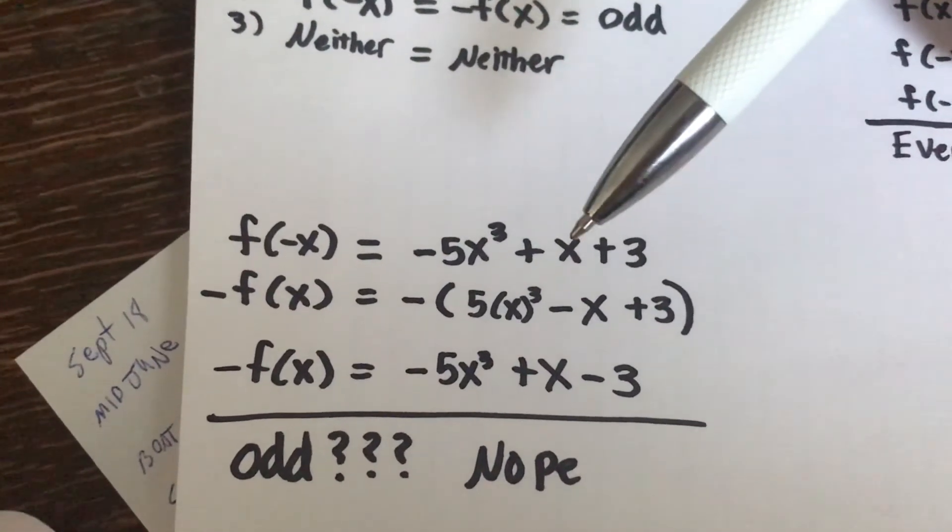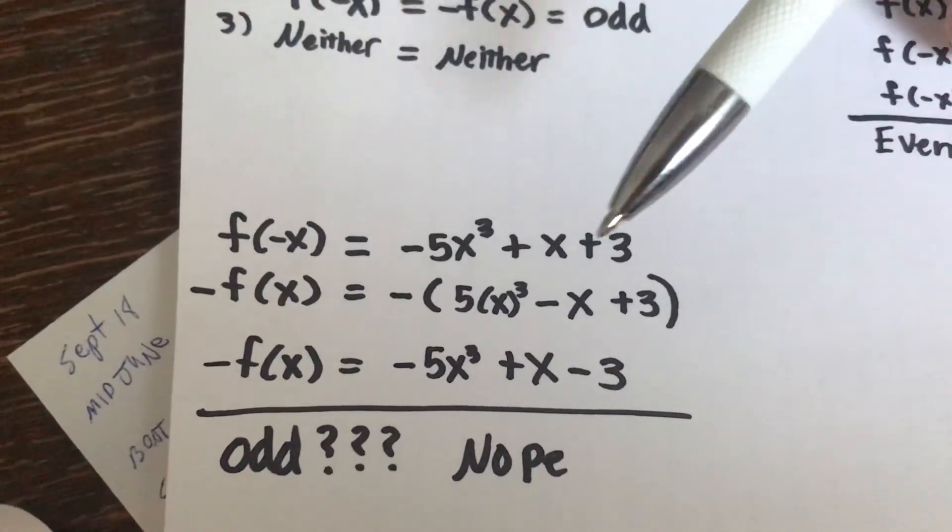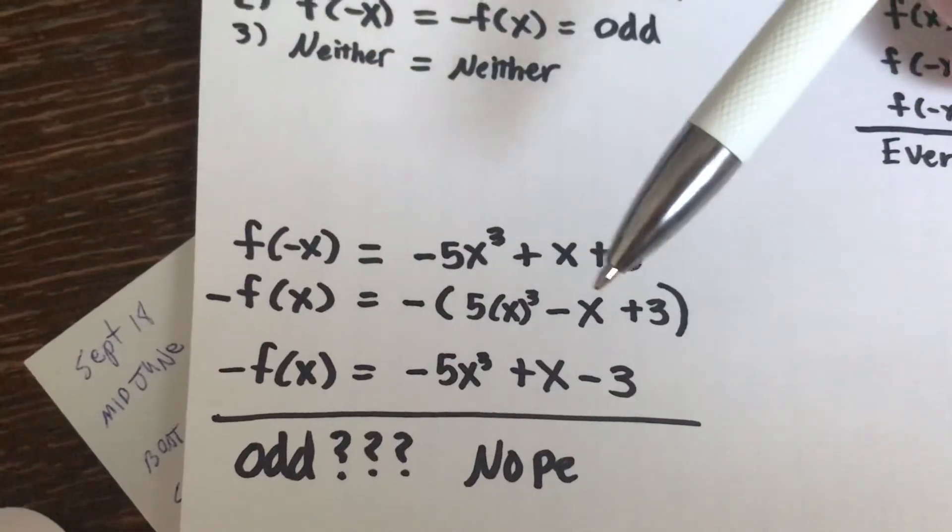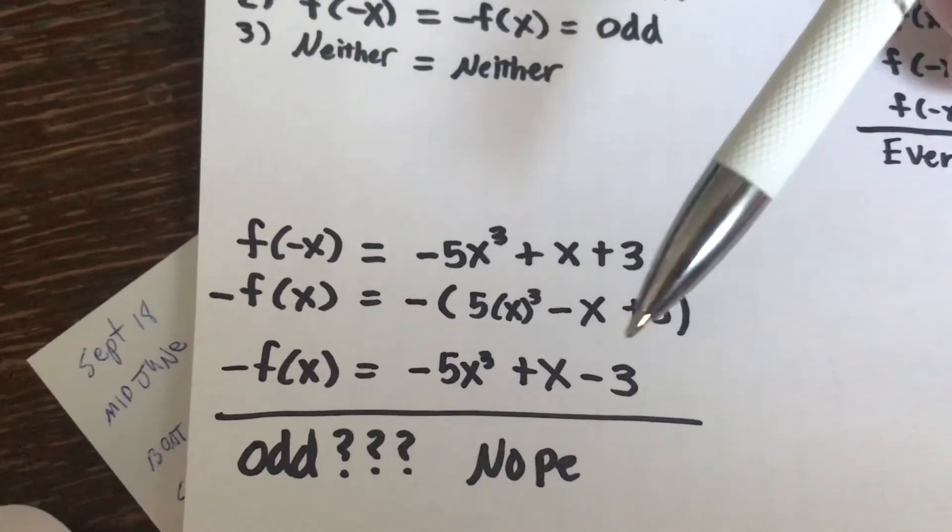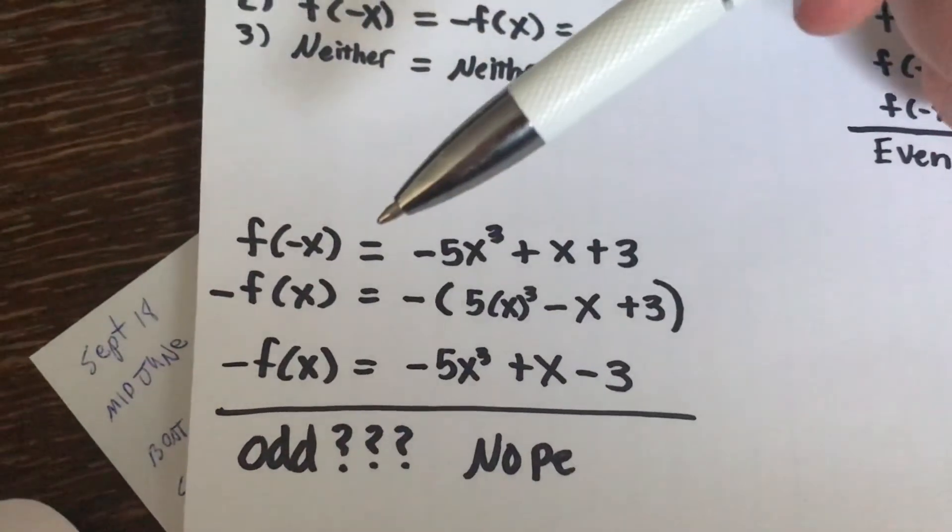But then we've got this positive 3 right here, and the negative times a positive 3 is going to give us a negative 3.